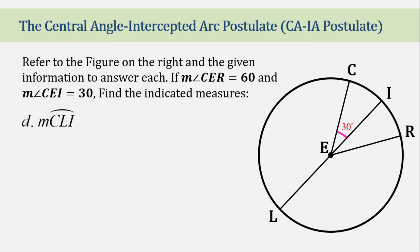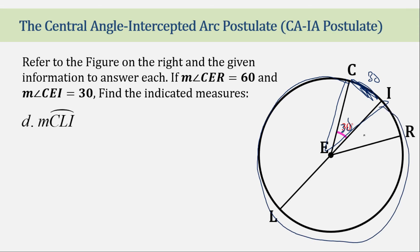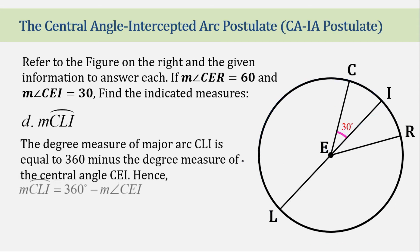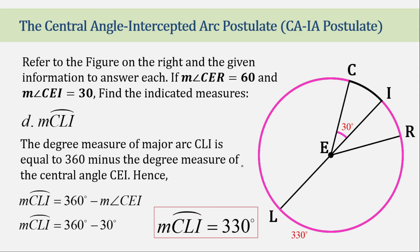For the next part, what is the measurement of major arc CLI? This is the major arc of angle CER. Since arc CR is 30 degrees and the whole circle is 360 degrees, we subtract 30 from 360 and get 330 degrees for major arc CLI.